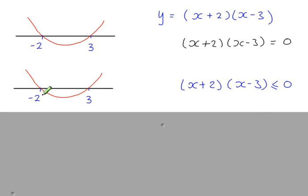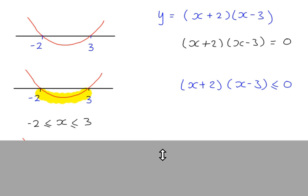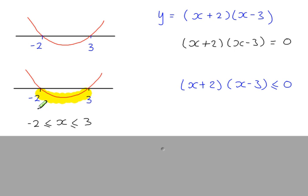The portion of the curve where the y-coordinates are less than or equal to 0 is this portion here. That's a single continuous region for x values starting from and including minus 2, and ending at and including 3. So the solution to this inequality is minus 2 ≤ x ≤ 3.